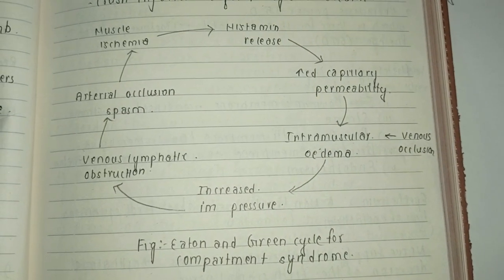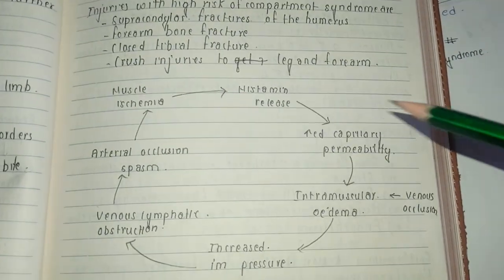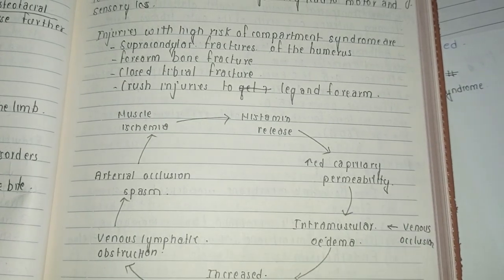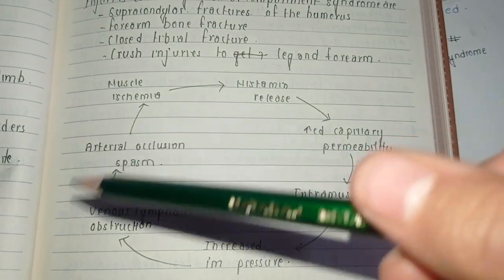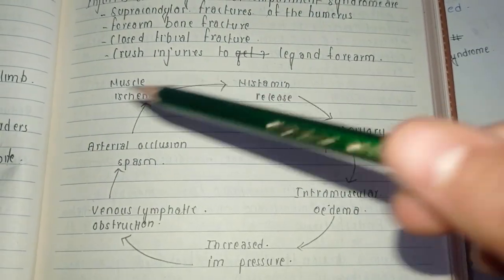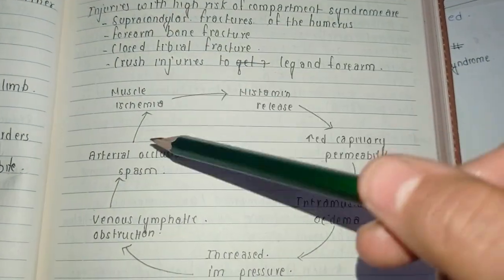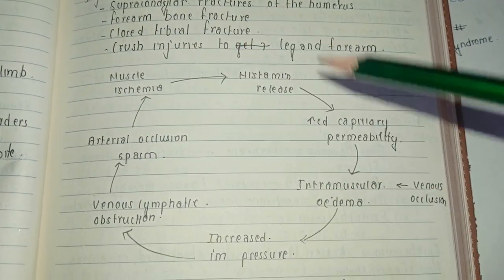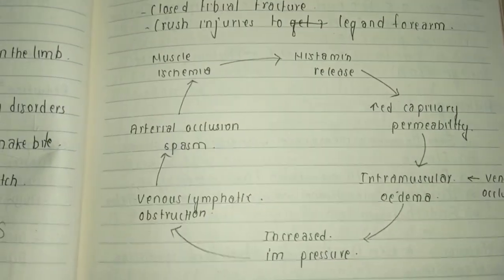There is a cycle called the Eaton and Green cycle for compartment syndrome. As you can see, there is increased capillary permeability, intramuscular edema, increased intramuscular pressure, then venous and lymphatic obstruction, which leads to arterial occlusion and spasm, and finally to muscle ischemia, which again leads to release of histamine. This cycle then repeats.